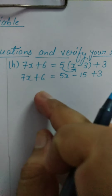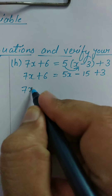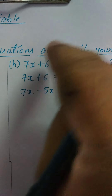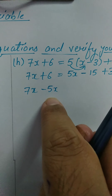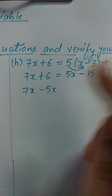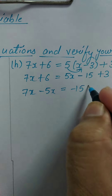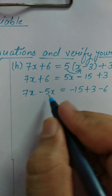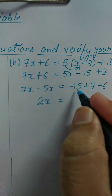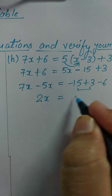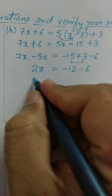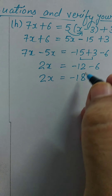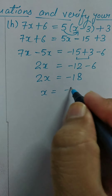Now put the like terms on one side. 7X minus 5X — this 5X becomes minus 5X when I shift it from RHS to LHS. 5X is positive on the right-hand side; when shifted to LHS, it becomes negative. So: 7X minus 5X equals 2X, equal to minus 15 plus 3, which equals minus 12 minus 6. So 2X is equal to minus 18. Minus 12 plus 6 is 18, and the minus sign remains because 12 is greater and has the minus sign. So X is equal to minus 18 divided by 2.